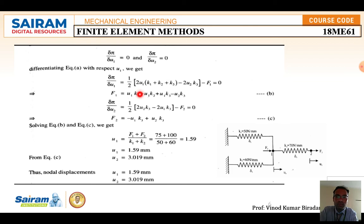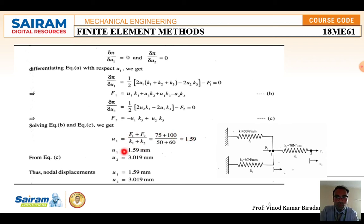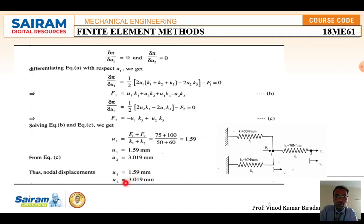Solving equations 1 and 2 simultaneously using the given values F1 = 75 N, F2 = 100 N, k1 = 50 N/mm, k2 = 60 N/mm, k3 = 70 N/mm, we get u1 = (F1 + F2) / (k1 + k2) = 1.59 mm. Substituting u1 back into either equation gives u2 = 3.019 mm. Therefore, the nodal displacements are u1 = 1.59 mm and u2 = 3.019 mm.